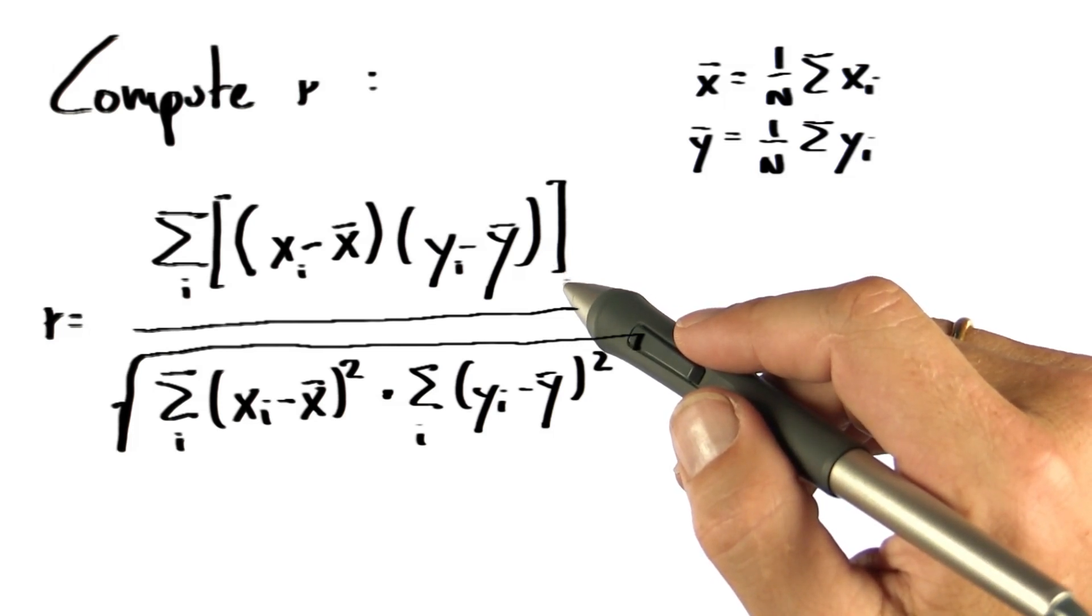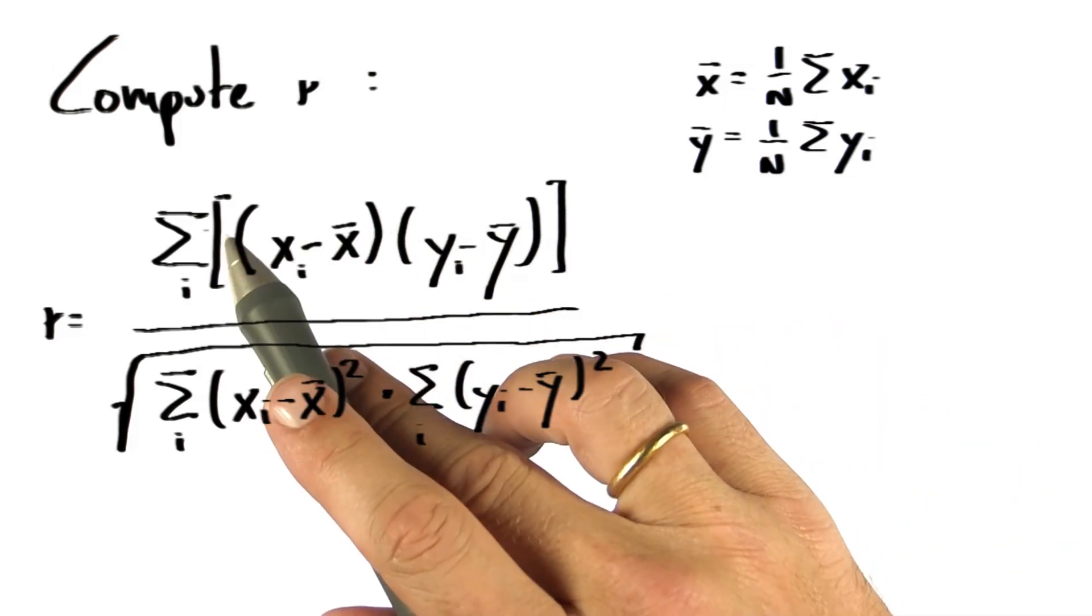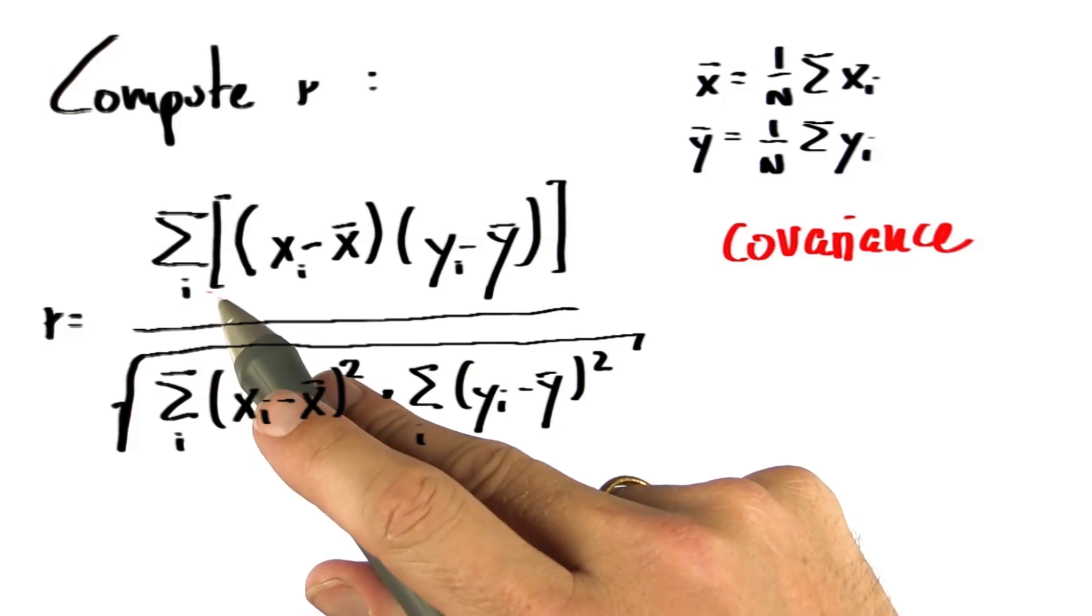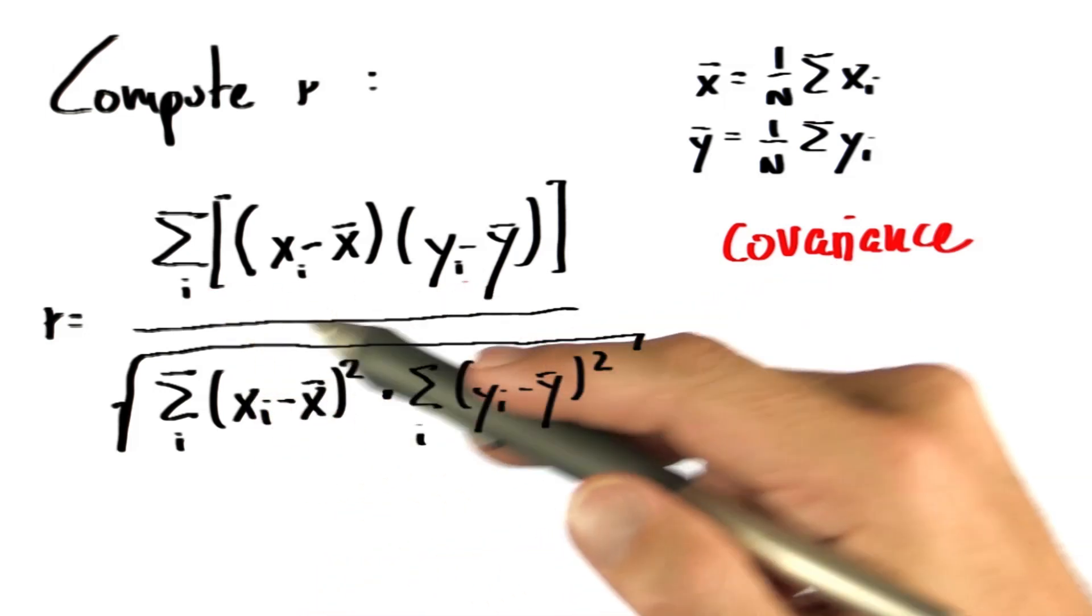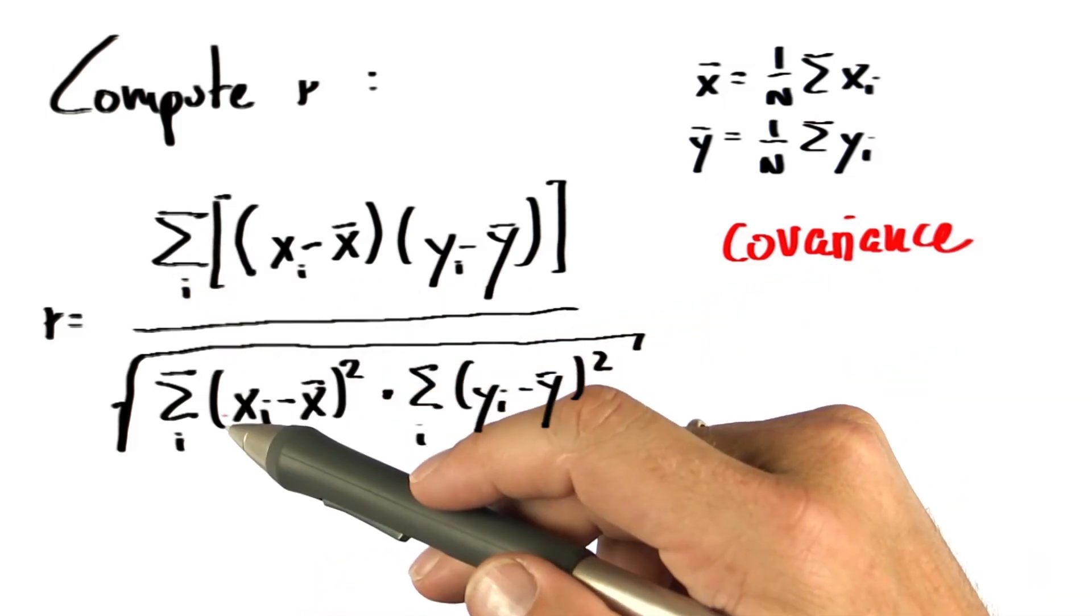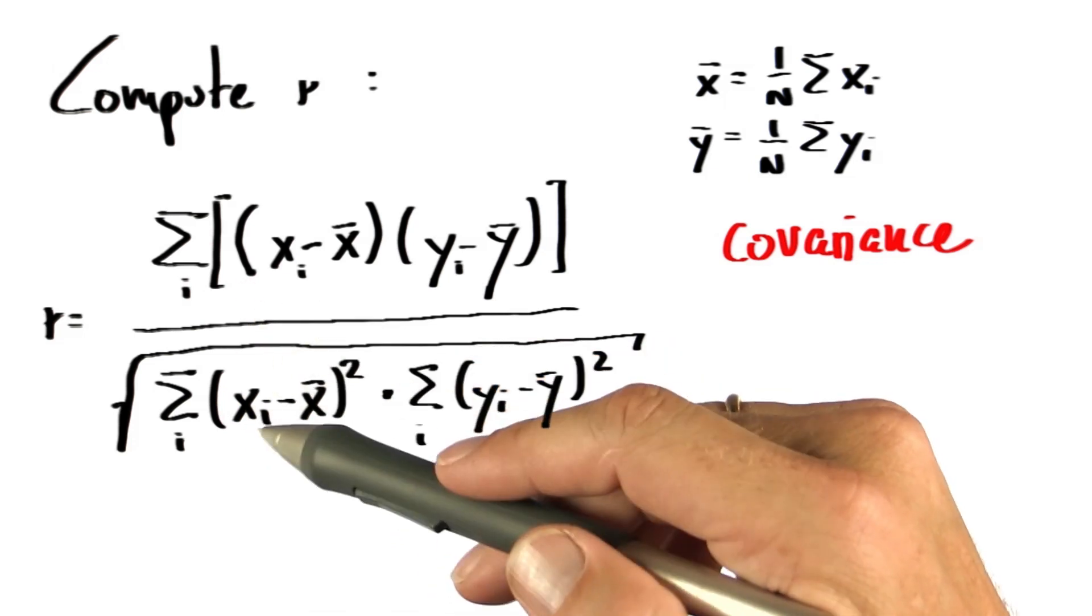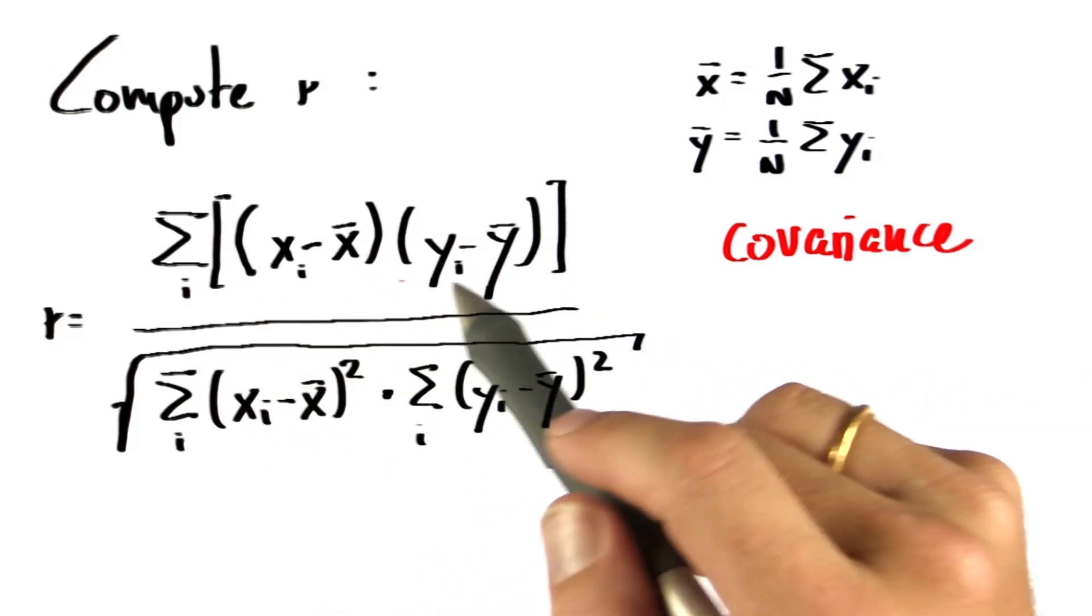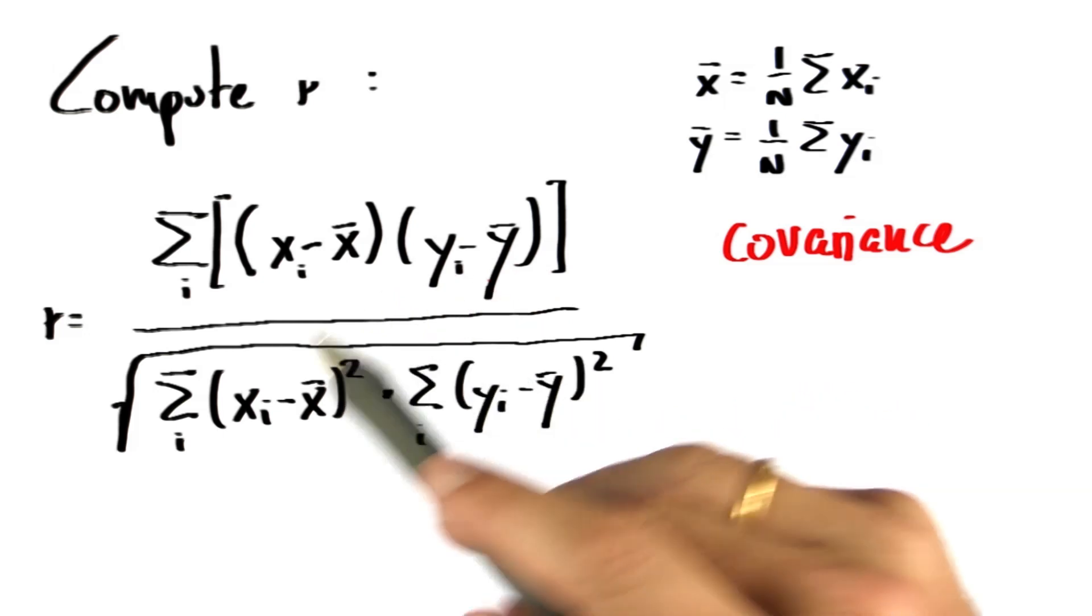This over here is kind of a mixed variance. This is often called the covariance, but notice that there's also a normalizer missing over here. In fact, the missing normalizers on top and bottom of this bar cancel each other out, hence I just omitted them. But this one is just like the variance calculation, but it mixes x's and y's.